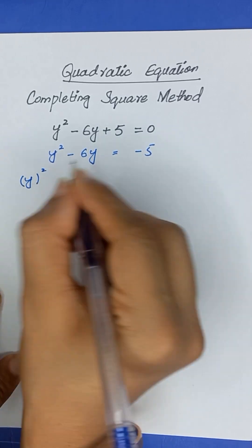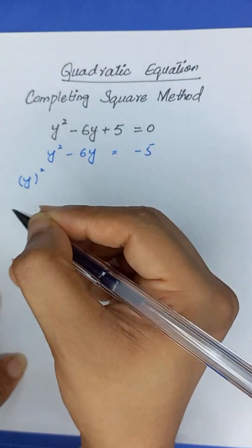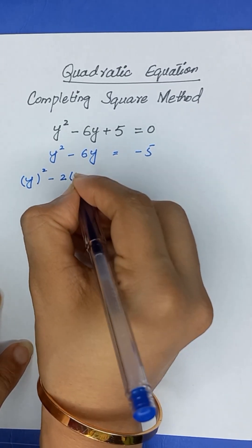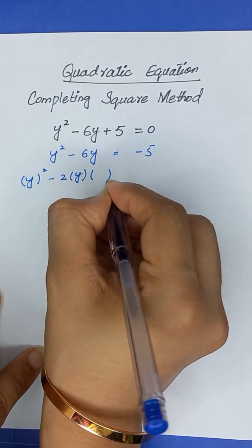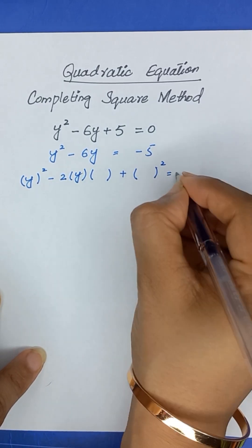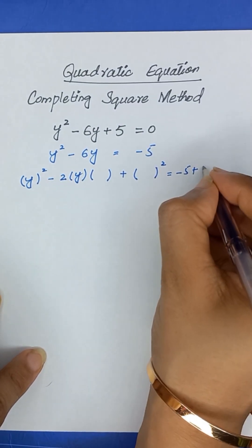Now, we will try to make in the form of a plus b whole square or a minus b whole square. So, a squared minus 2 times y times what will be the value of b and then here we will add b squared and also we will add b squared on right hand side.